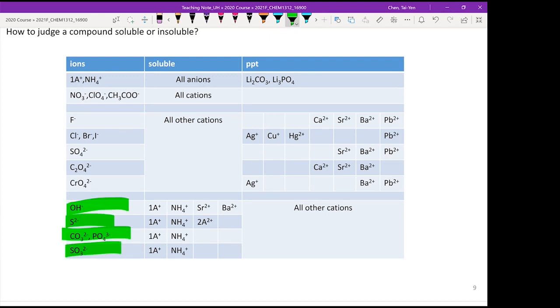Four series of anions: OH- minus, S2- minus, CO3 2- minus, PO4 3- minus, SO3 2- minus. Every time you see these anions inside your chemical formula, 90 percent of the time they are insoluble salt.